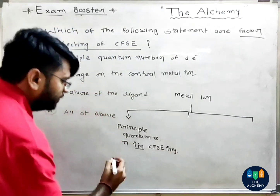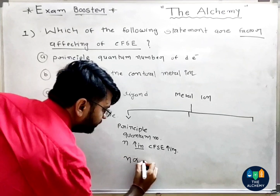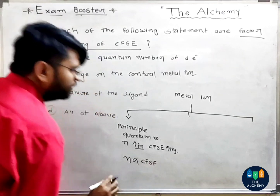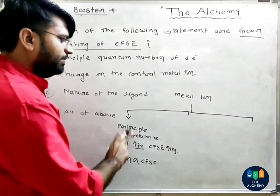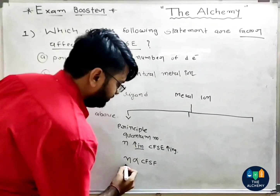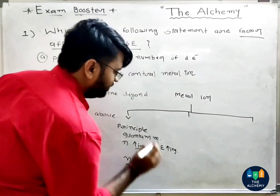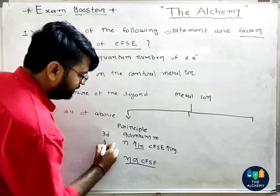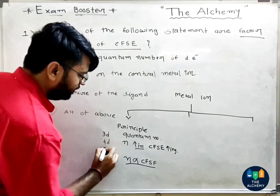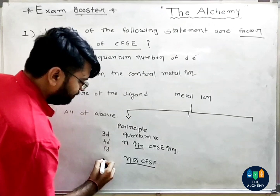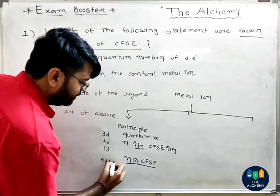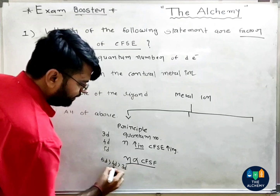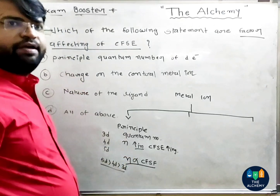N is proportional to CFC. For example, going from period 3 to 4 to 5 — that is, 3d to 4d to 5d — CFC increases. Conversely, 5d to 4d to 3d gives decreasing CFC.